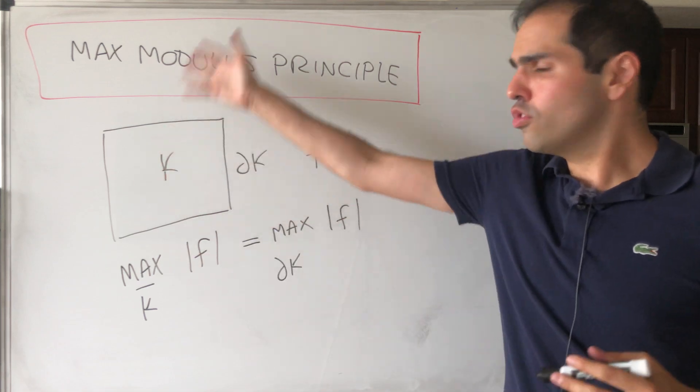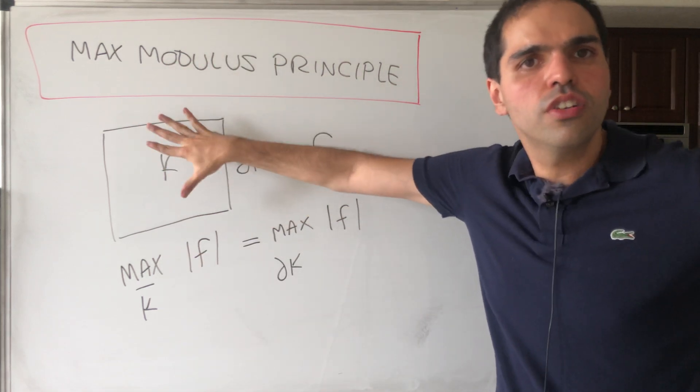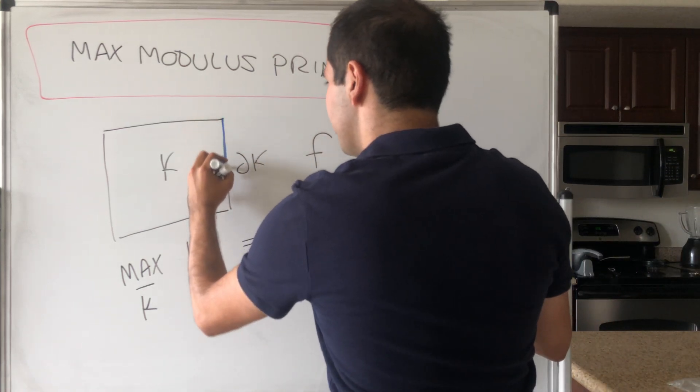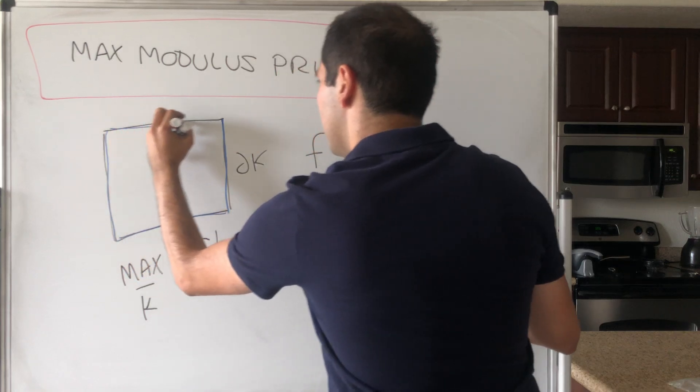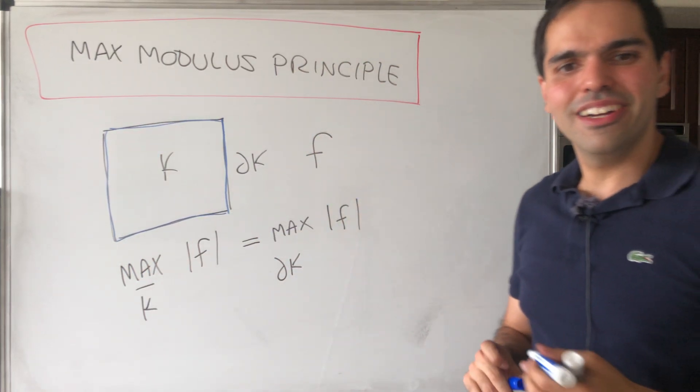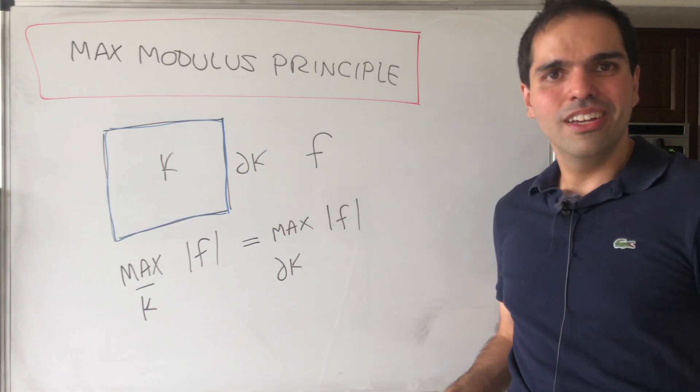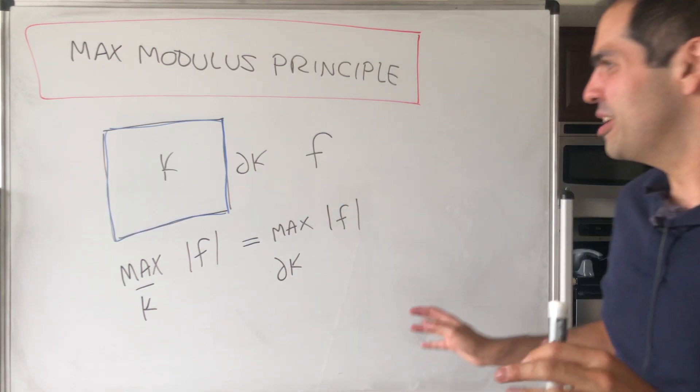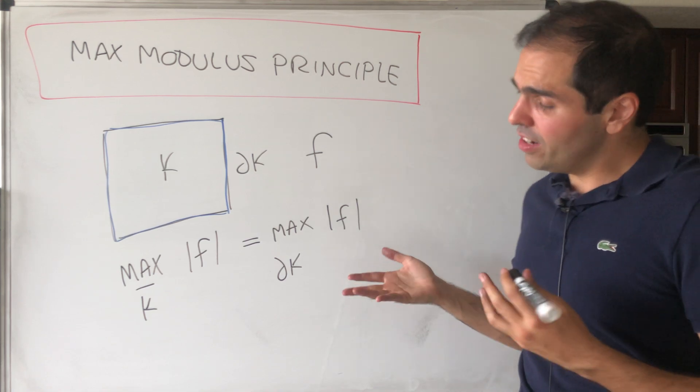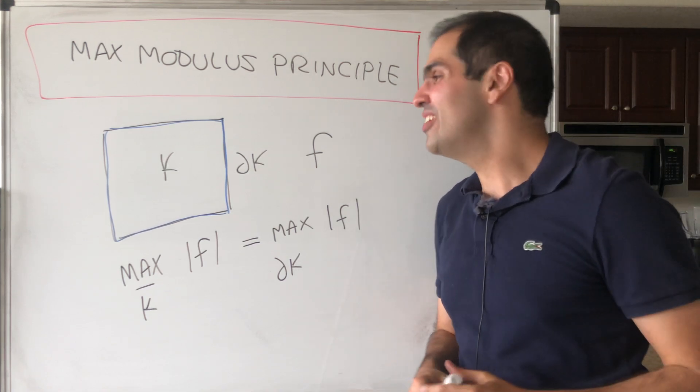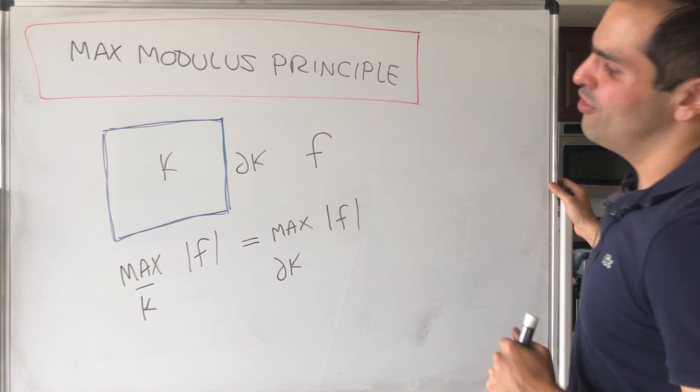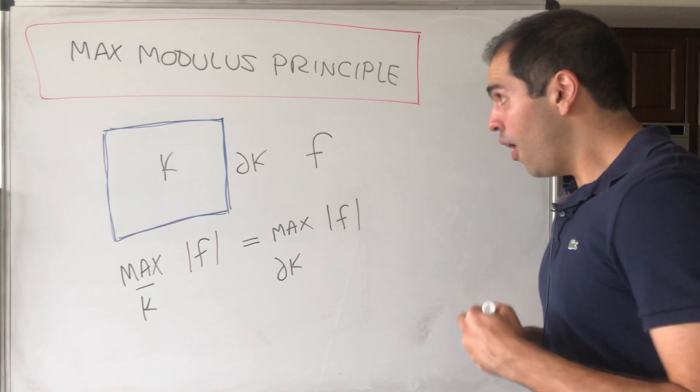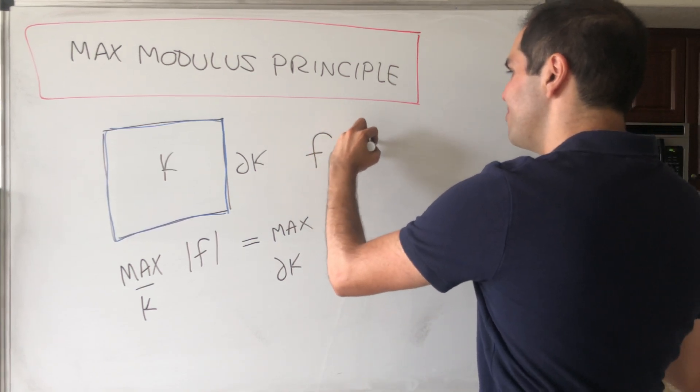So in other words, in order to find a maximum of function on the whole set, you just need to look at the boundary, which is much easier to do. And this has many nice consequences. You can show uniqueness of solutions to Laplace's equation, for example. It's very nice. But what I want to do today is a little math cookie. I want to show the following: not only is this true for the function itself, but it's also true for the real and imaginary parts.